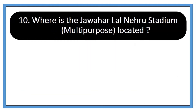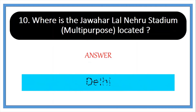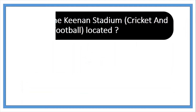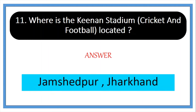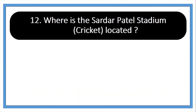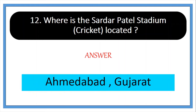Ten: where is the Jawaharlal Nehru Stadium (multipurpose) located? Answer: Delhi. Eleven: where is the Keenan Stadium (cricket and football) located? Answer: Jamshedpur, Jharkhand. Twelve: where is the Sardar Patel Stadium (cricket) located? Answer: Ahmedabad, Gujarat.